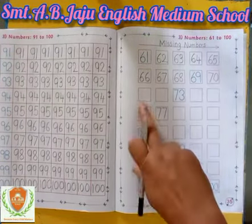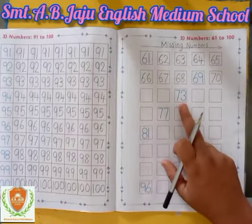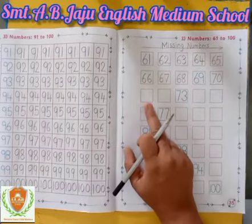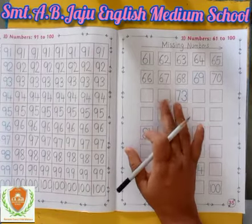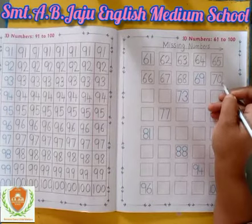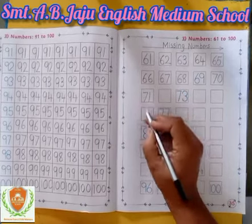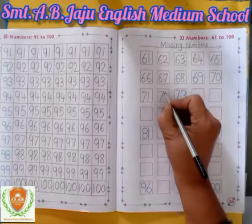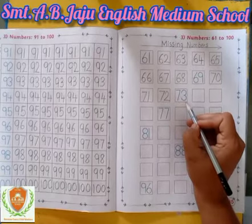Now here again we have to do missing numbers — we have to write down. Here is 73. Before 73, which numbers will come? After 70, write down 71. Then write down 72. After 72, this is 73.